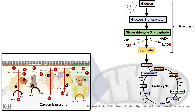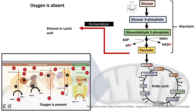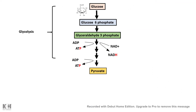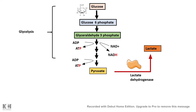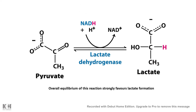That is one fate of pyruvate when oxygen is present. But this video is focused on the alternative fate of pyruvate when oxygen is absent. In an anaerobic situation, fermentation takes place, which ultimately leads to the production of ethanol or lactic acid. We are going to see how lactic acid is produced. From pyruvate, the enzyme lactate dehydrogenase converts pyruvate to lactic acid or lactate, and in this process NADH is utilized and NAD+ is produced. NADH provides the reduction equivalent for pyruvate reduction into lactate.